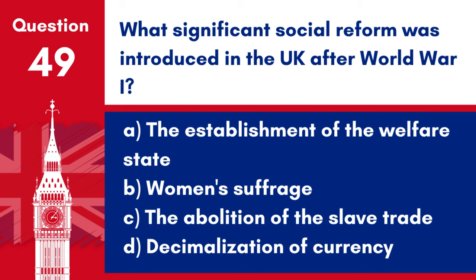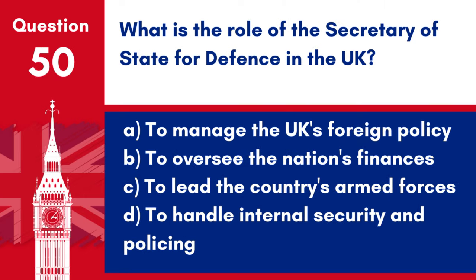Question 49. What significant social reform was introduced in the UK after World War I? a. The establishment of the welfare state. b. Women's suffrage. c. The abolition of the slave trade. d. Decimalisation of currency. Answer: b. Women's suffrage. After World War I, significant social reform included the extension of voting rights to women over the age of 30 in 1918, which was a major step towards full women's suffrage achieved in 1928.